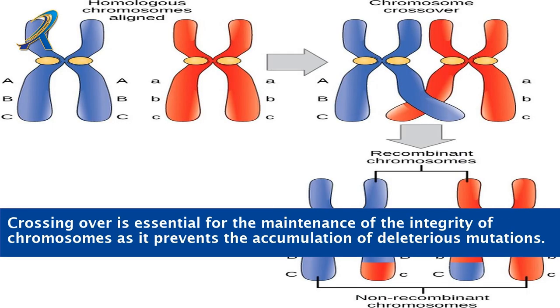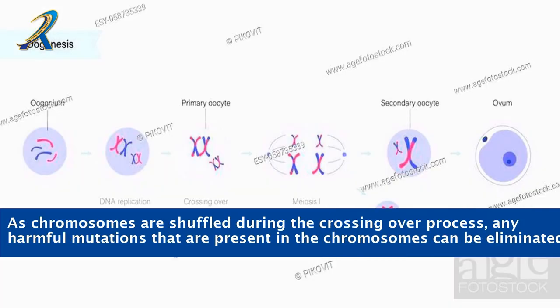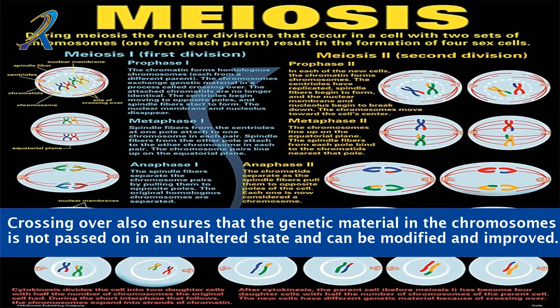Crossing over is essential for the maintenance of the integrity of chromosomes, as it prevents the accumulation of deleterious mutations. As chromosomes are shuffled during the crossing over process, any harmful mutations present can be eliminated. Crossing over also ensures that the genetic material in the chromosomes is not passed on in an unaltered state and can be modified and improved.